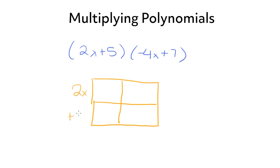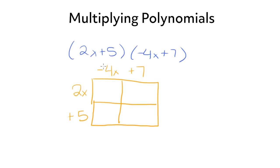I'm going to write 2x plus 5 over here and negative 4x plus 7 up here. Since we're multiplying, it doesn't matter which binomial goes on the top and which one goes on the left. So now we're going to multiply our left term by our top term for each box. Starting with 2x times negative 4x, which gives us negative 8x squared.